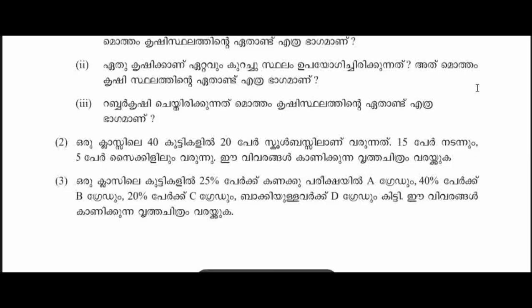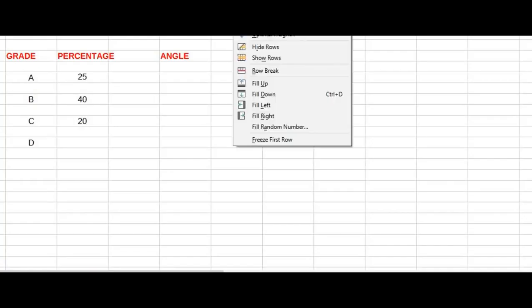The last thing is the angle. If you have the angle, you can see the angle. Now you can see the table — grade, percentage, and angle. In A grade, percentage is 25. B grade is 40. C grade is 20. A grade is 25, B grade is 40, C grade is 20.